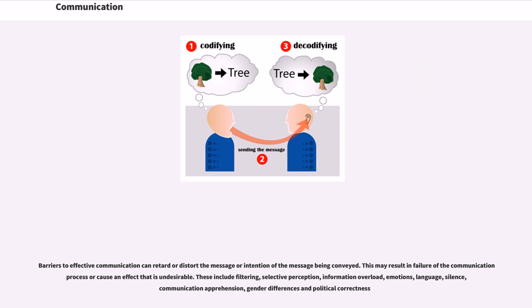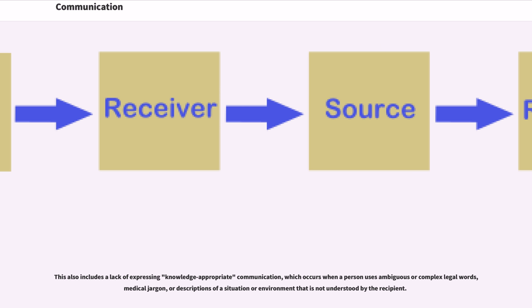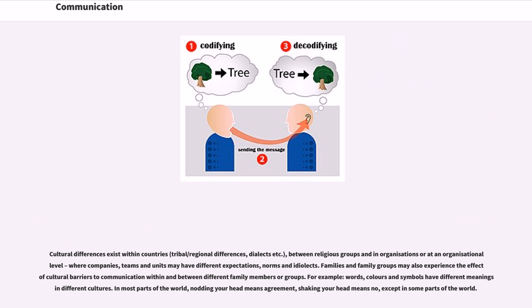This also includes a lack of expressing knowledge-appropriate communication, which occurs when a person uses ambiguous or complex legal words, medical jargon, or descriptions of a situation or environment that is not understood by the recipient. Cultural differences exist within countries (tribal, regional differences, dialects, etc.), between religious groups and organizations, or at an organizational level where companies, teams, and units may have different expectations, norms, and dialects. Families and family groups may also experience the effect of cultural barriers to communication within and between different family members or groups. For example, words, colors, and symbols have different meanings in different cultures. In most parts of the world, nodding your head means agreement, shaking your head means no, except in some parts of the world.